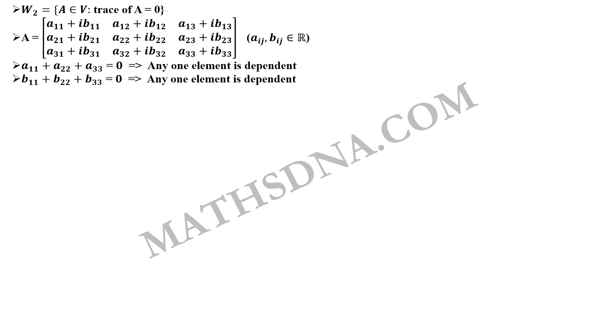Similarly, for B11 plus B22 plus B33 equals to 0 any one element will be dependent. You can take two elements to be independent. The last one will sum them all to 0.